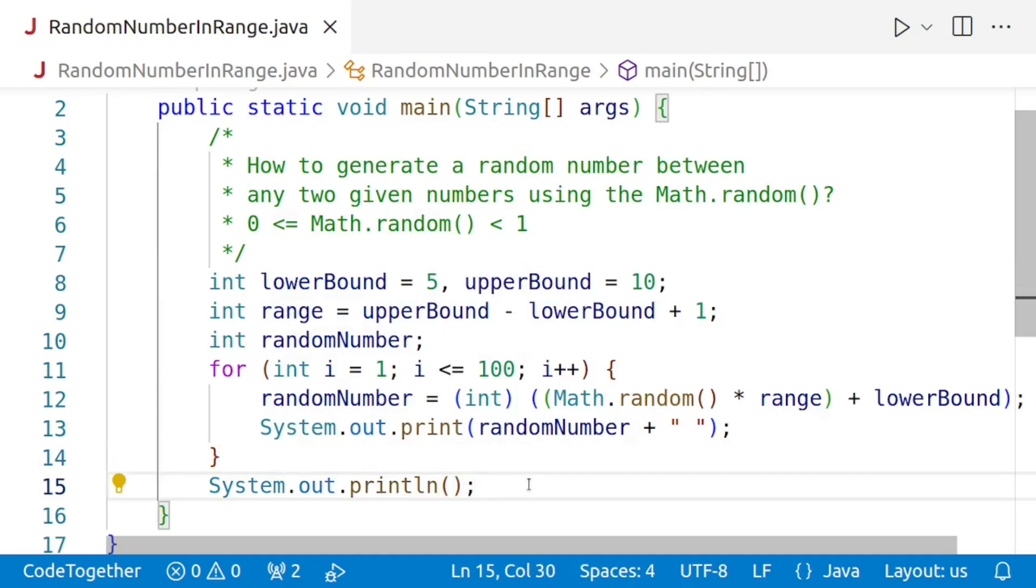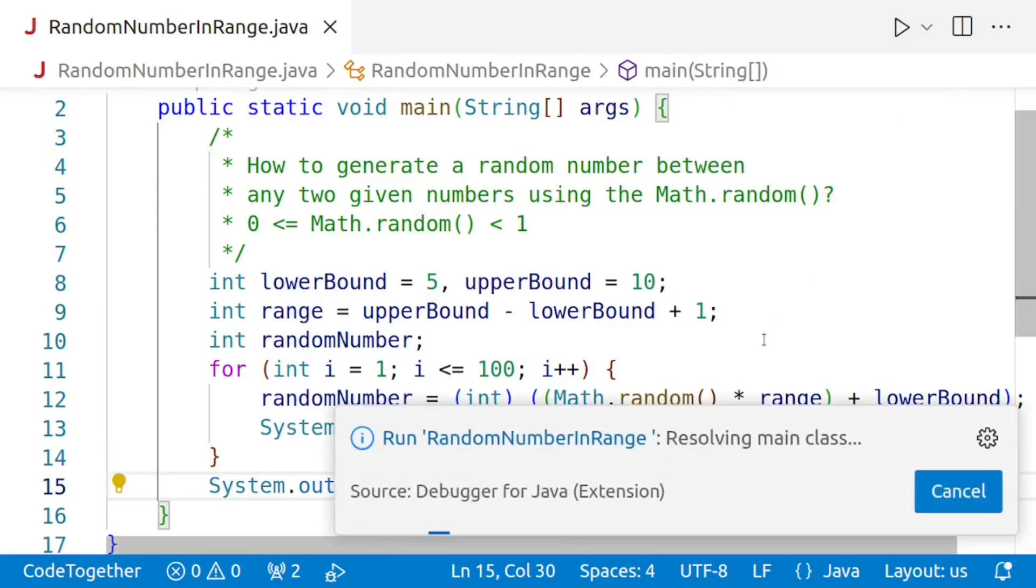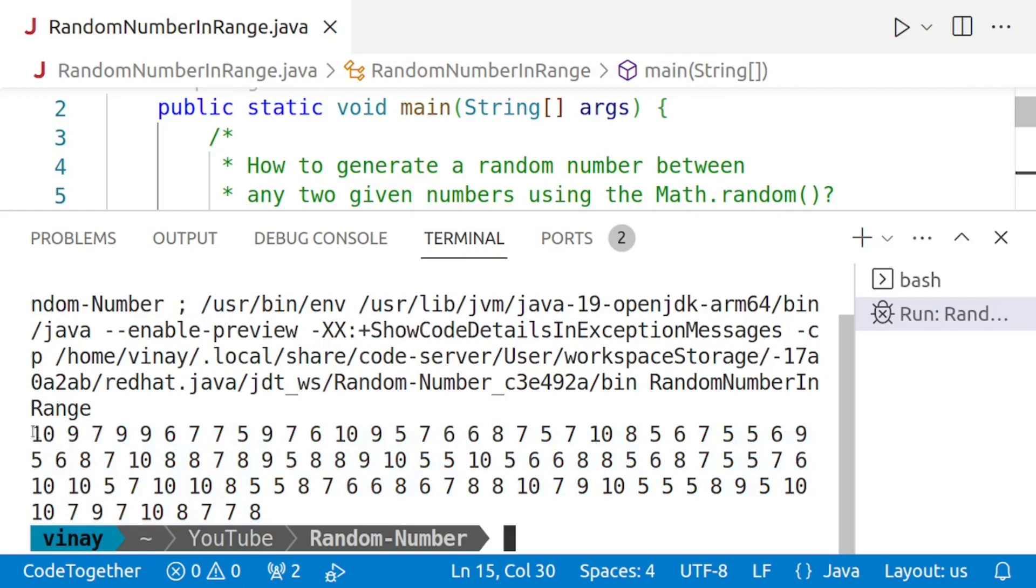So, now if I run this program, I should get 100 random numbers between 5 and 10. Let's work it out. We'll run the program and there we are. We are getting 100 values to be precise within the range and we cannot spot any value which is less than 5 or more than 10.